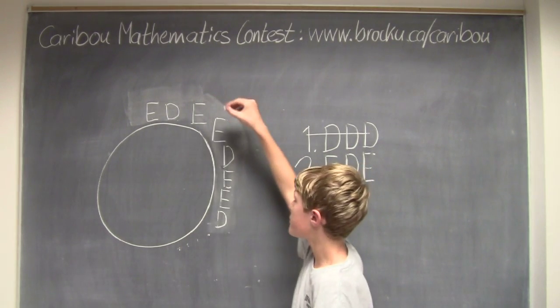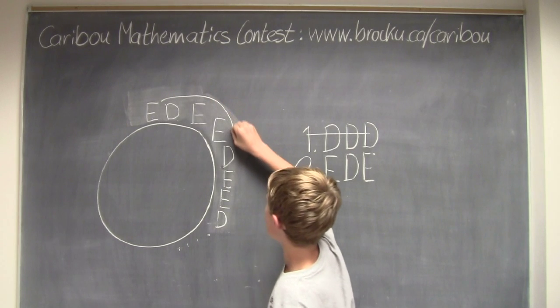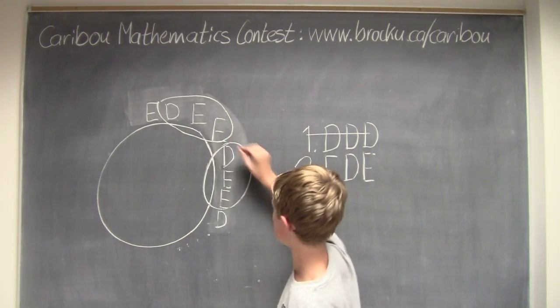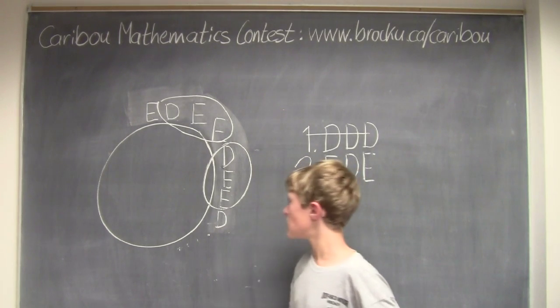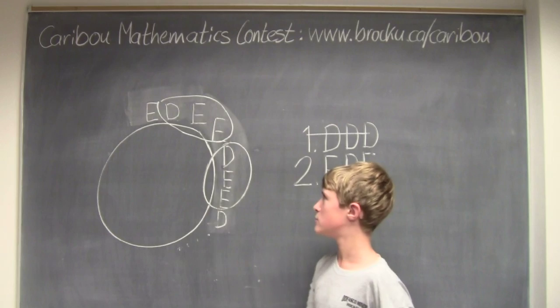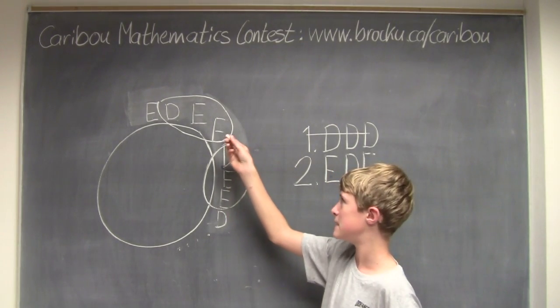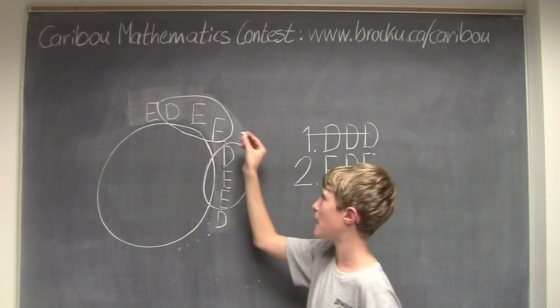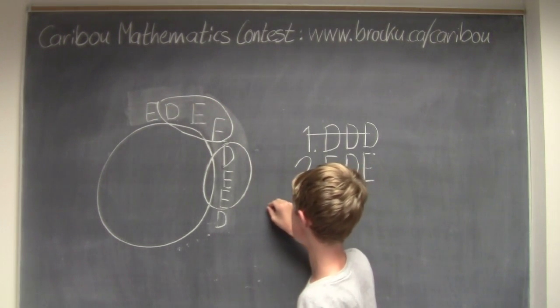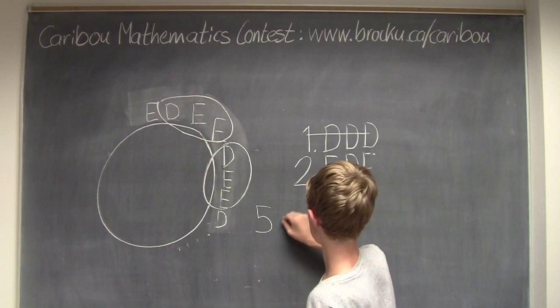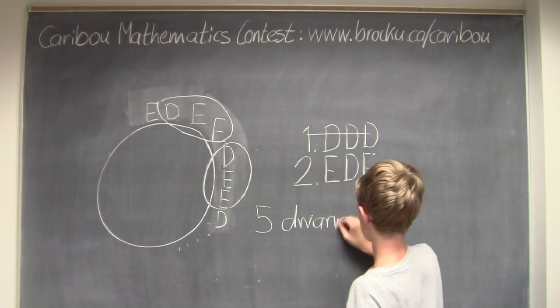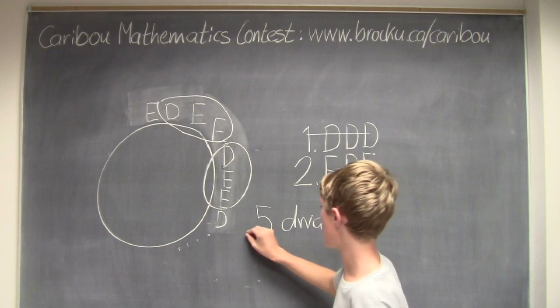So there are groups of three, with one dwarf and two elves in it. Like this. Okay, so since there's one dwarf in a group of three, you would do 15, because there are 15 dwarves and elves, divided by three, because groups of three, which would be five. So there are five dwarves, and ten elves.